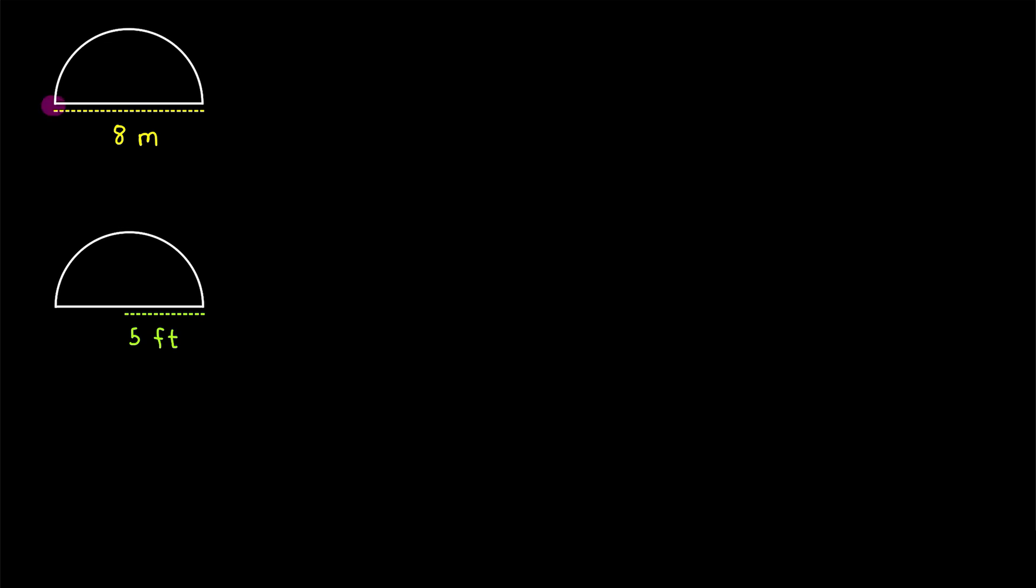For this semicircle, we know its diameter is 8 meters. We want to find its perimeter, that's the distance around the semicircle. We know a lot about normal circles, so we want to use that knowledge to figure out what the perimeter is of a semicircle.